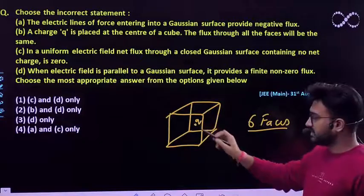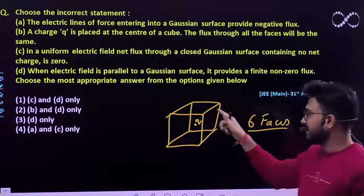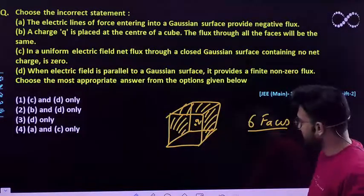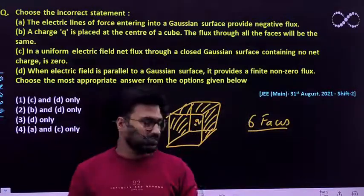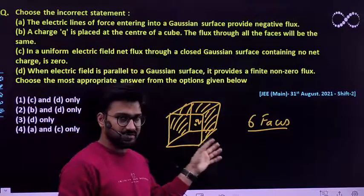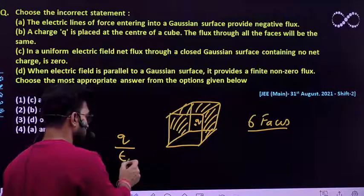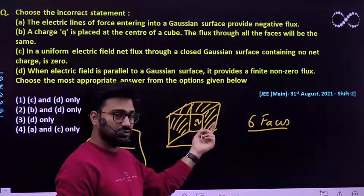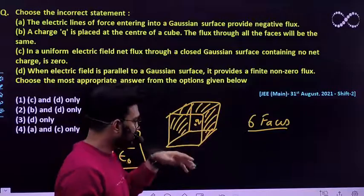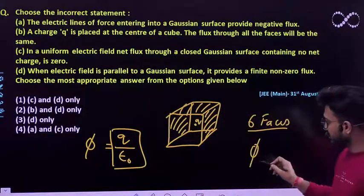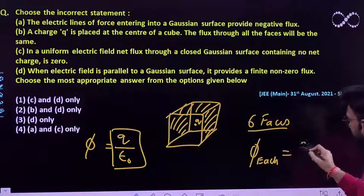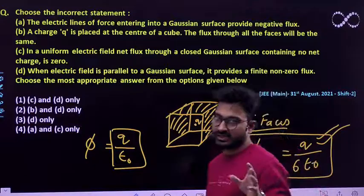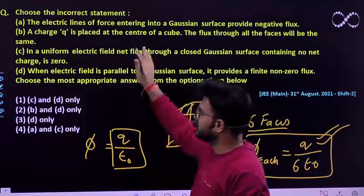The charge is placed at the middle, so the number of electric field lines crossing any particular face must be the same, because it is at an equal distance from all these faces. We also know by Gauss's law that the total flux is equal to Q_in by epsilon naught. So the total flux coming out from charge Q is Q by epsilon naught. Since it has to go through six identical faces, the flux linked through each face must be equal to Q_in divided by 6 epsilon naught. So the flux through each face must be equal. This statement is also true.